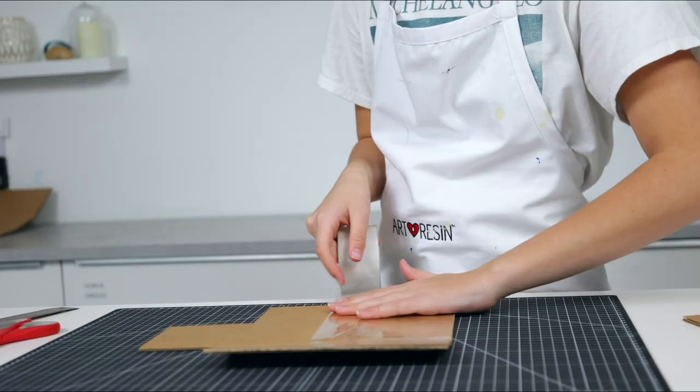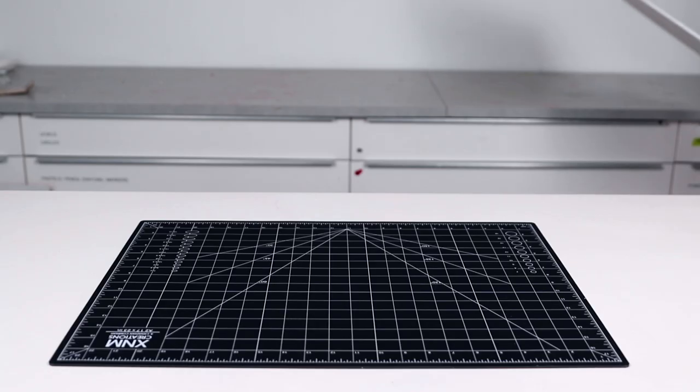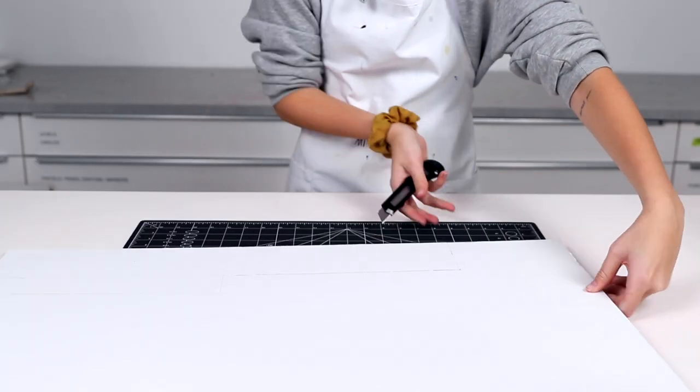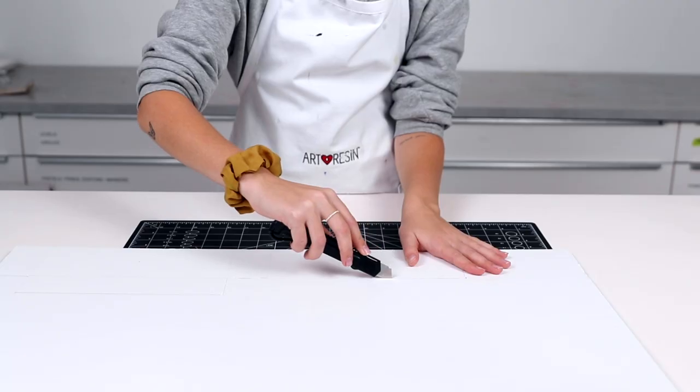The first thing you're going to want to do is make a box slightly larger than your object. In this case we'll use foam core to build the box. Simply map out the size of your box and cut the material accordingly.